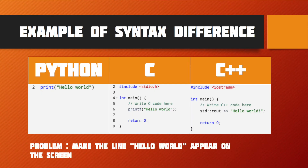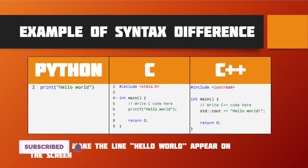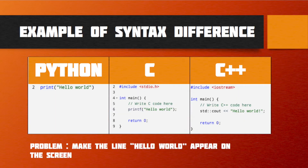Let me show you how the syntax differs in each language. Here you can see three languages: Python, C, and C++. The problem is that we need to make the line 'Hello World' appear on the screen. In Python, there is only one line of code to solve the problem. But in C and C++, there are several lines of code. Even though C and C++ have some similarities, the syntax differs in each language.